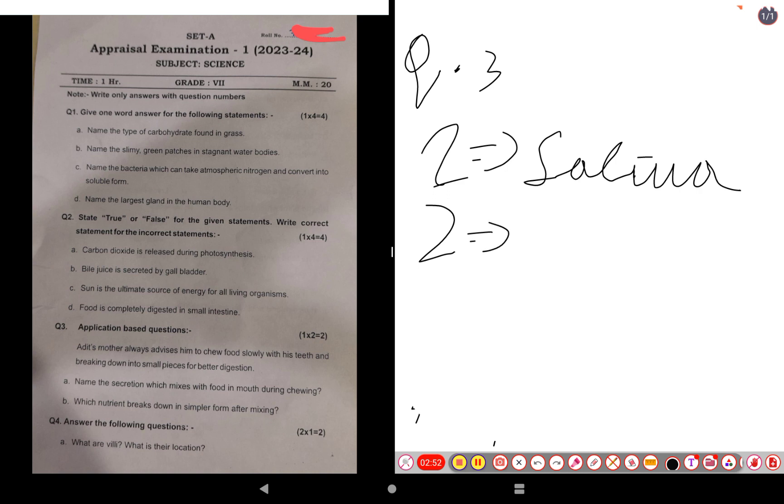Second question: which nutrient breaks down in simpler form after mixing? The nutrient which breaks down in simpler form after mixing is starch.